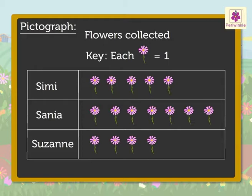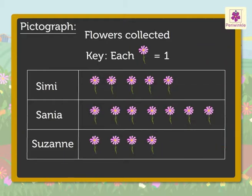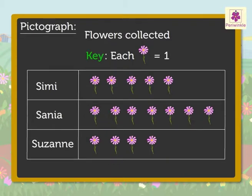We should be able to collect information from a pictograph by reading it. Every pictograph has: one, a title which tells us what the pictograph is about; two, pictures which tell us the given number of objects; three, labels which tell us what kind of data is shown; and four, a key which tells us the number each picture is equal to.